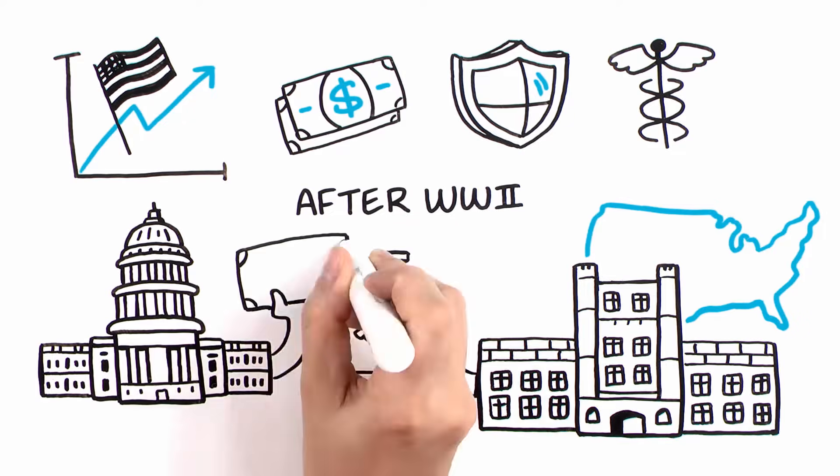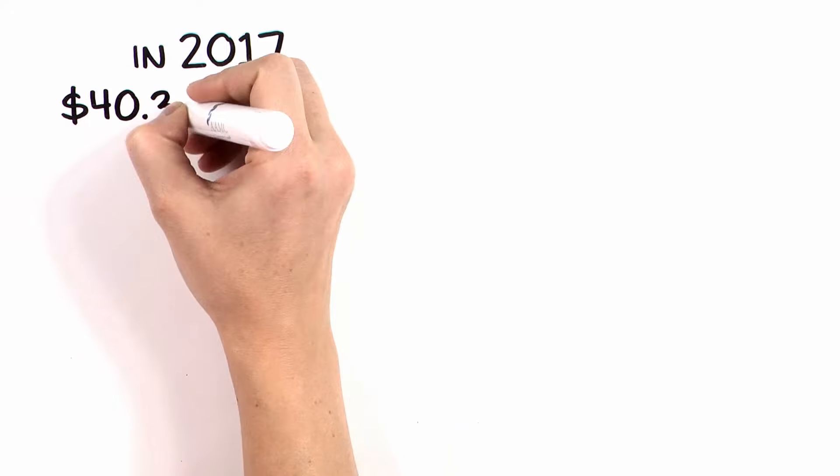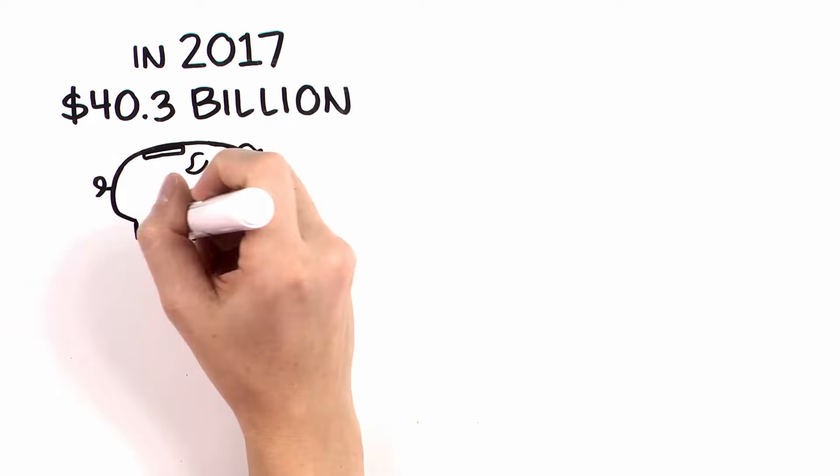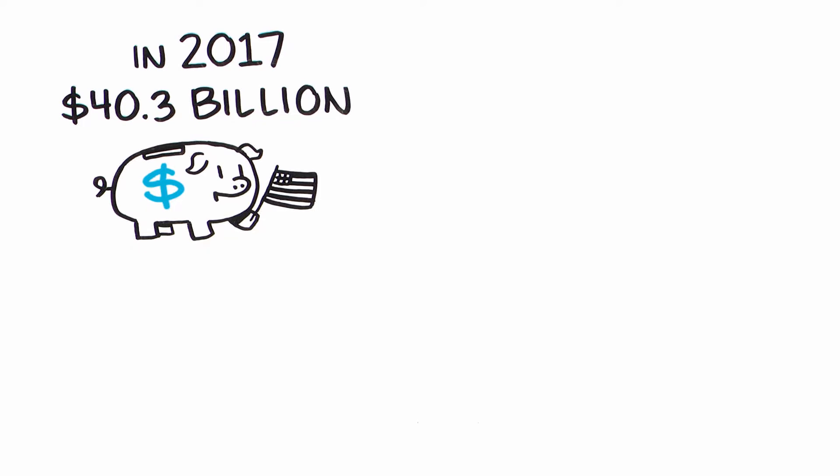Central to this partnership is federal grant funding. In 2017, the federal government invested over $40 billion to support research conducted by U.S. colleges and universities on behalf of federal agencies.